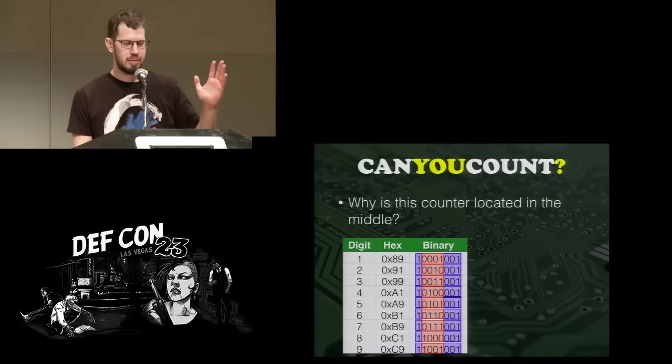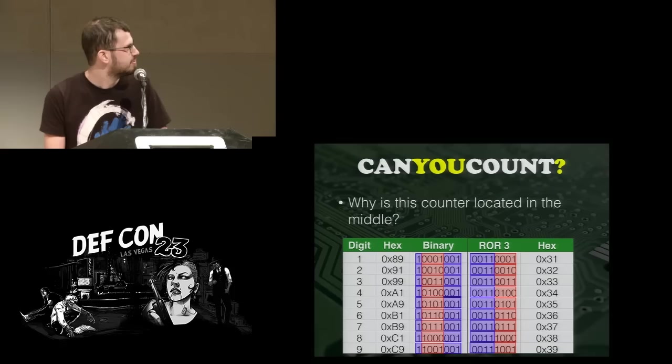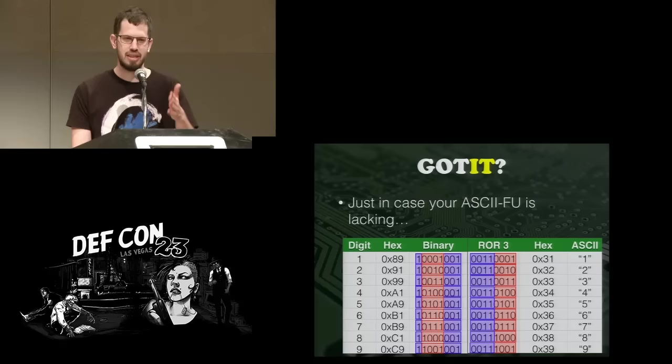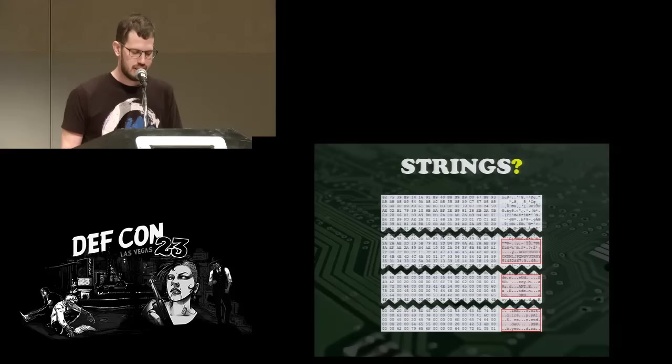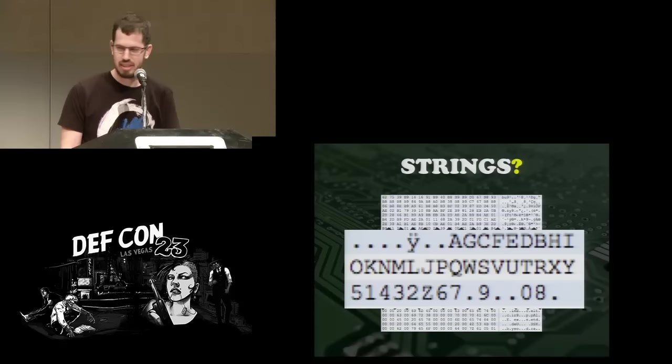We thought: maybe we should rotate the entire byte three positions to the right, so the counter moves to the right end of the byte. We did just that and got some hex values. Most of you probably recognize these hex values — they're ASCII values, and not just any ASCII values: they map exactly to the digit we found earlier. So we know this rotation operation is meaningful. Let's do this operation on the entire blob. When you do this, the blob changes — and now we actually have strings! There are actually strings, including what looks like a base-64 or alphanumeric string.